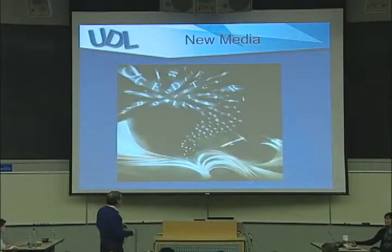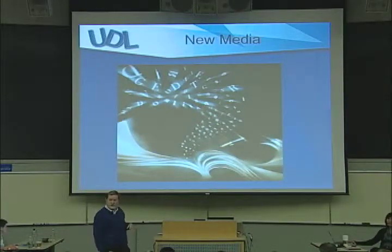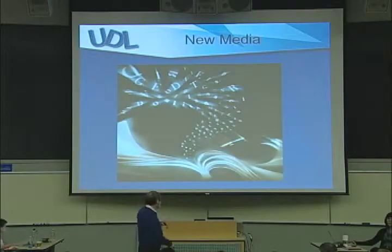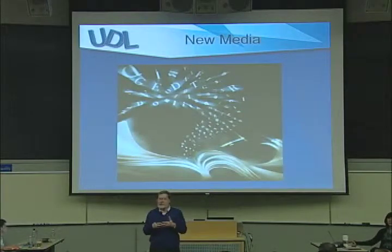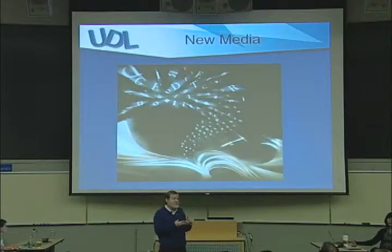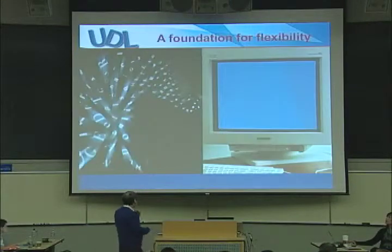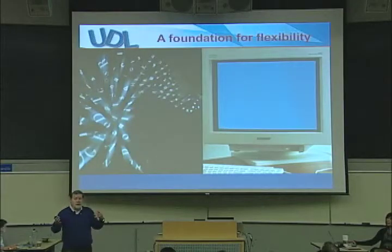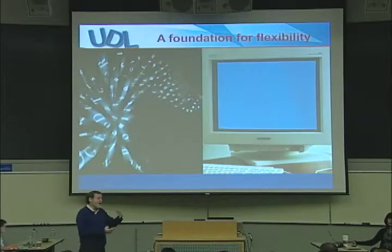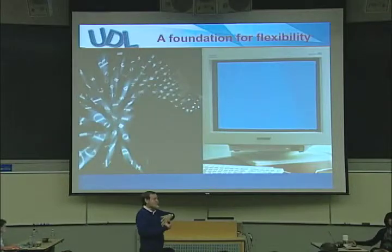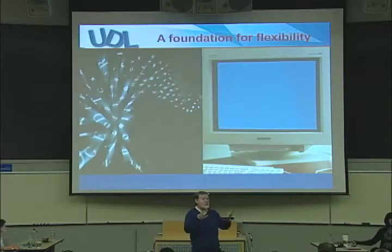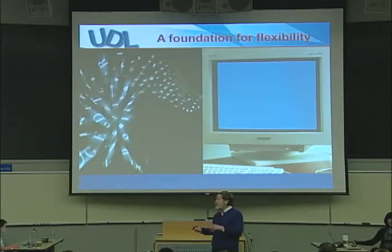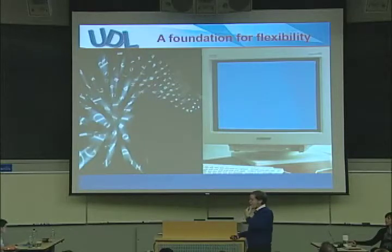The key thing about new media is there's a separation between the content and the display device. In printed books, the content is dyed into the book itself — you don't get that separation; the book and the content are the same thing. In new media, the content is separate from the display device. We've stored it on a hard drive, out on the web, in the cloud — the information is stored in digits somewhere.